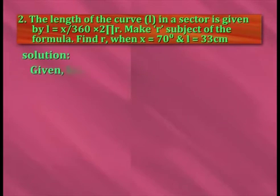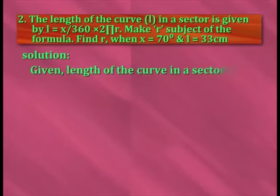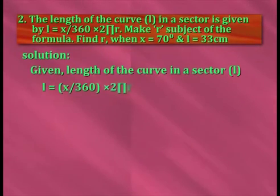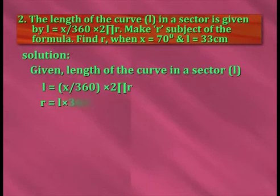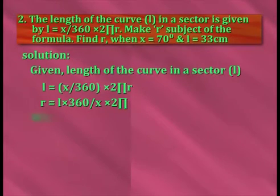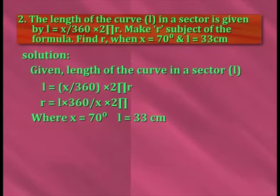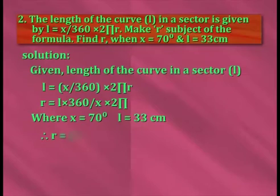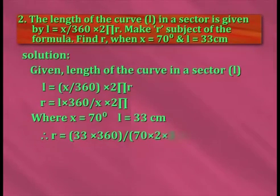Given length of the curve in a sector l is equal to x by 360 into 2πr, r is equal to l into 360 by x into 2π, where x is equal to 70 degrees and l is equal to 33 centimeters. Therefore, r is equal to 33 into 360 by 70 into 2 into 3.14.